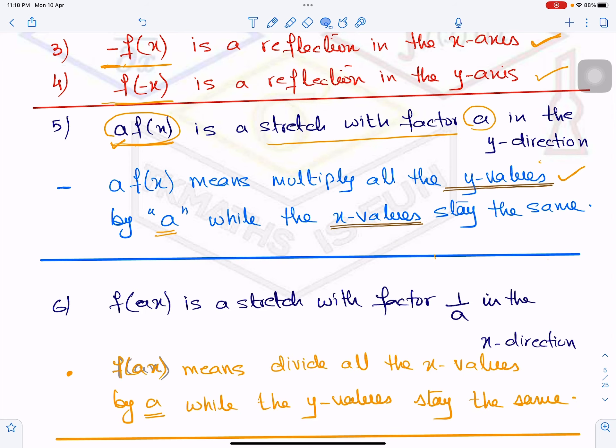Now see this one, this is f(ax). What does it mean? It means now there will be a stretch with factor 1 over a in the x direction. So the moment you will look at a times f(x), you will understand there is a stretch parallel to y-axis. When you will see f(ax), it means there's a stretch along the x-axis. But in this case, what does it mean? All the x values of the graph will be divided by this constant and y values will remain the same.